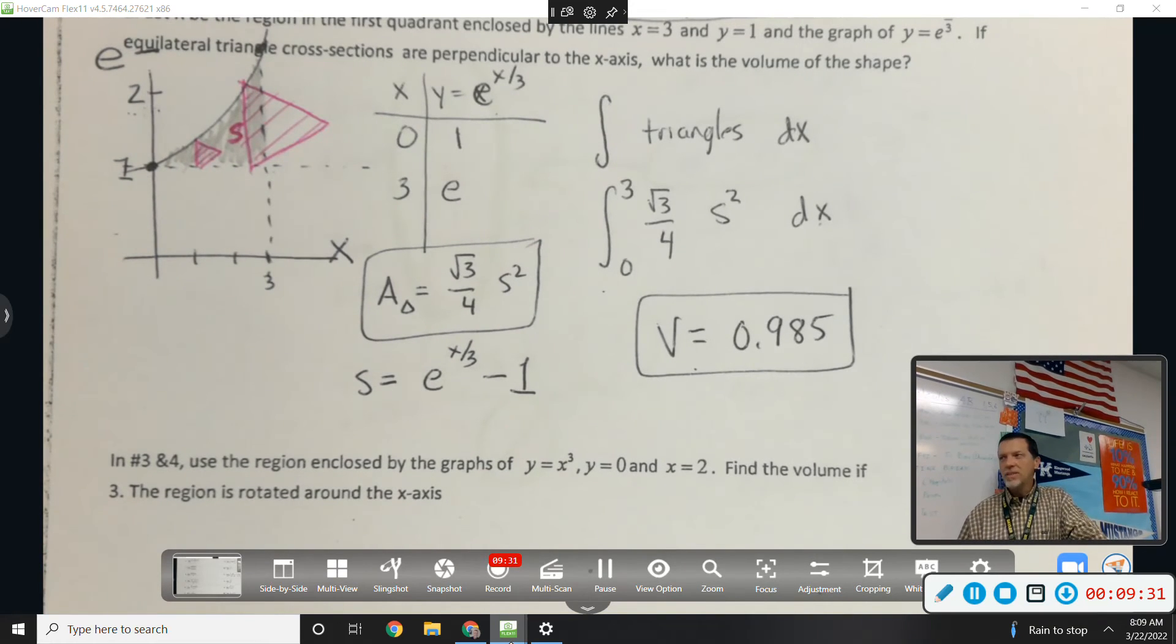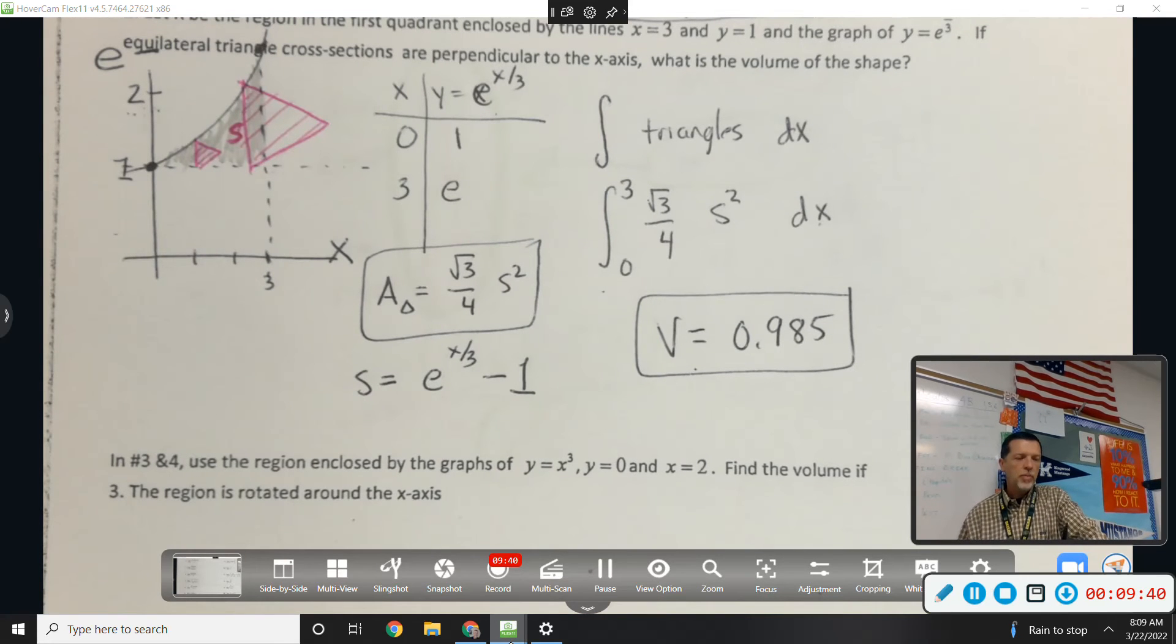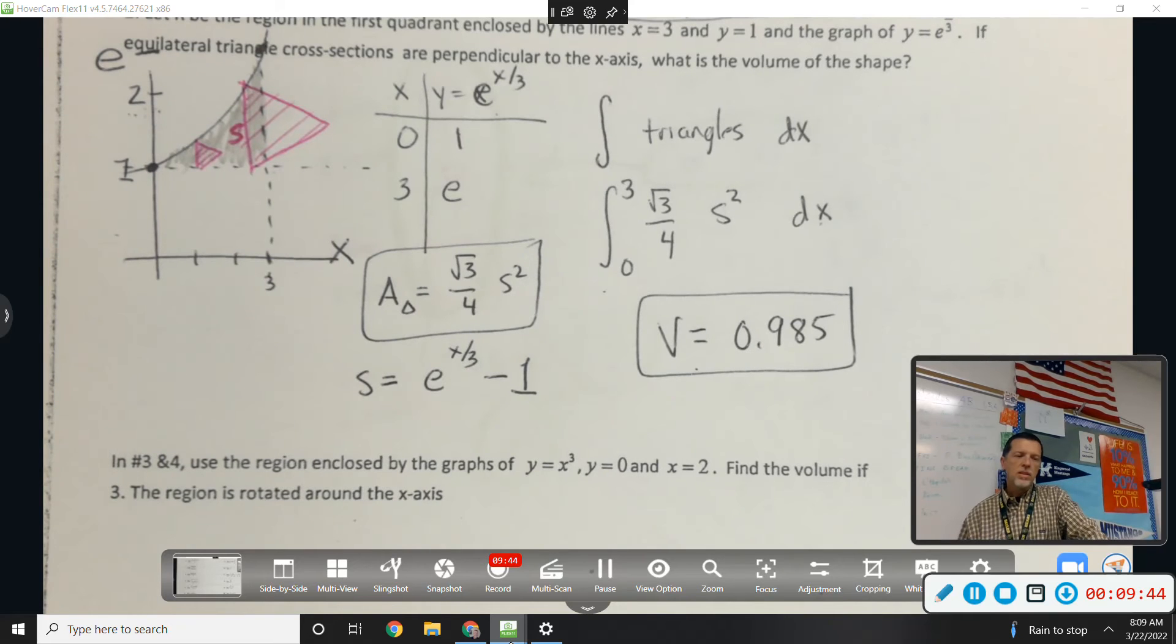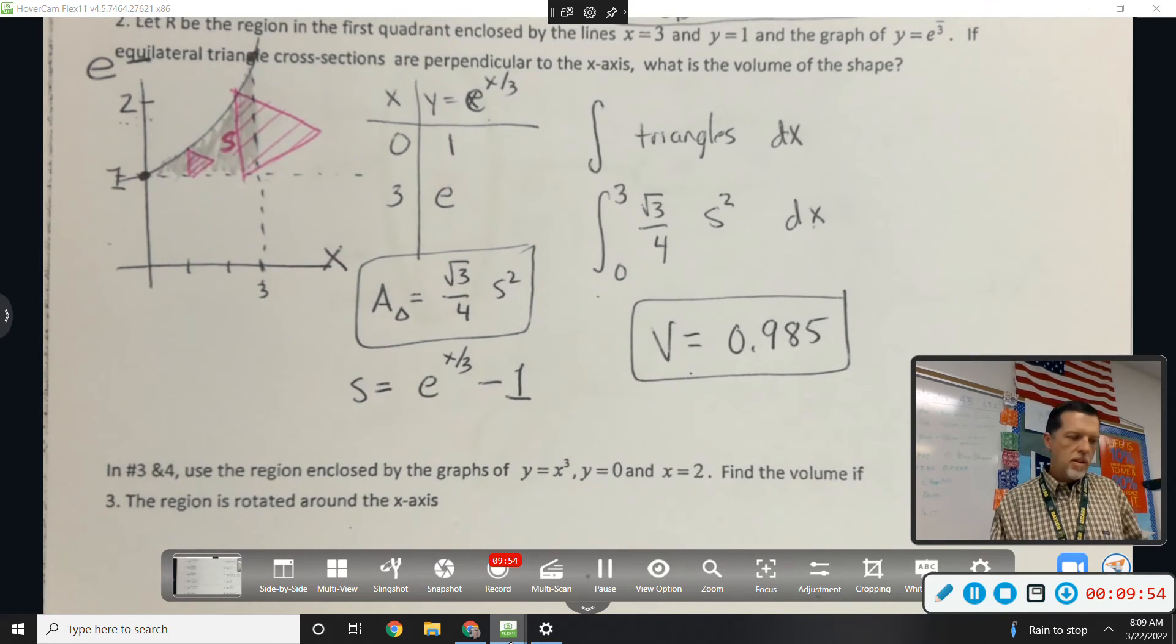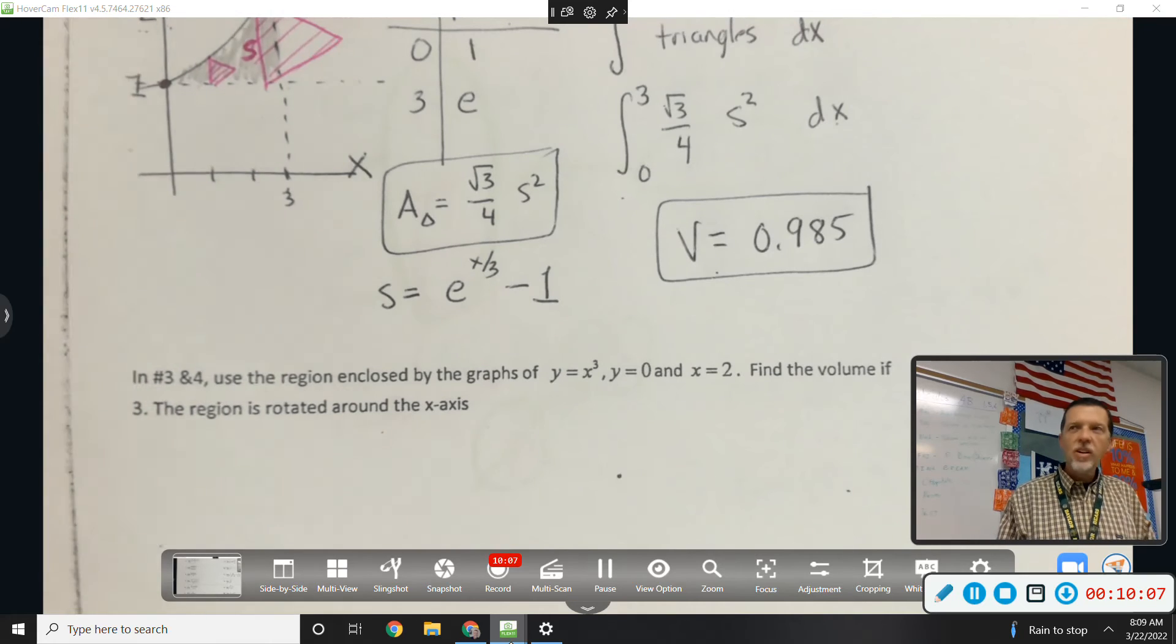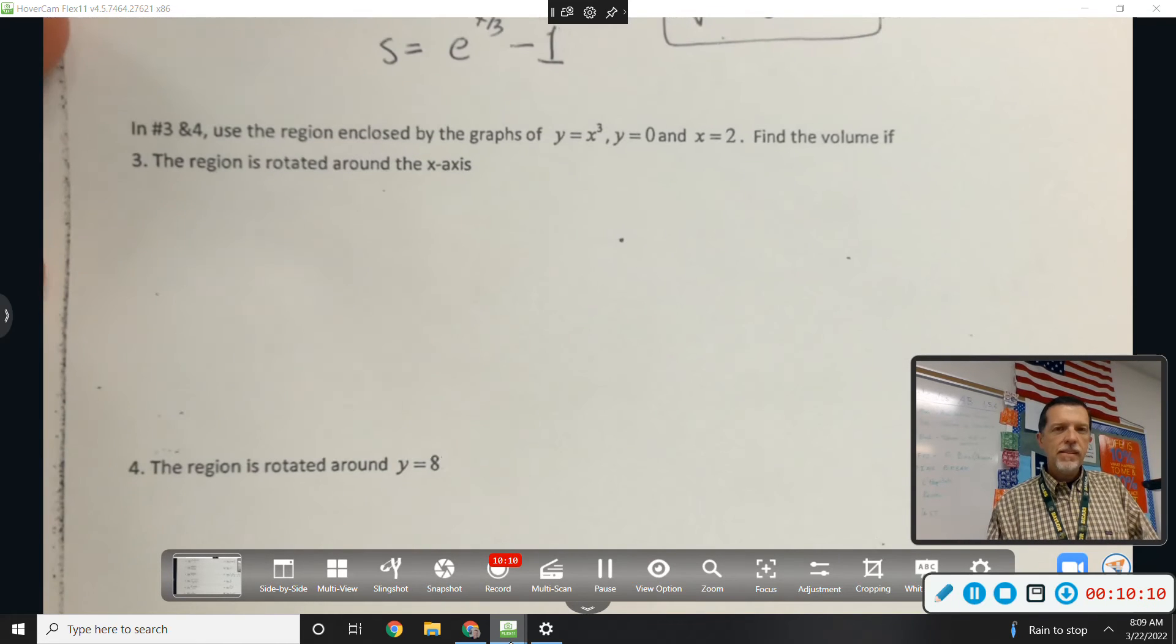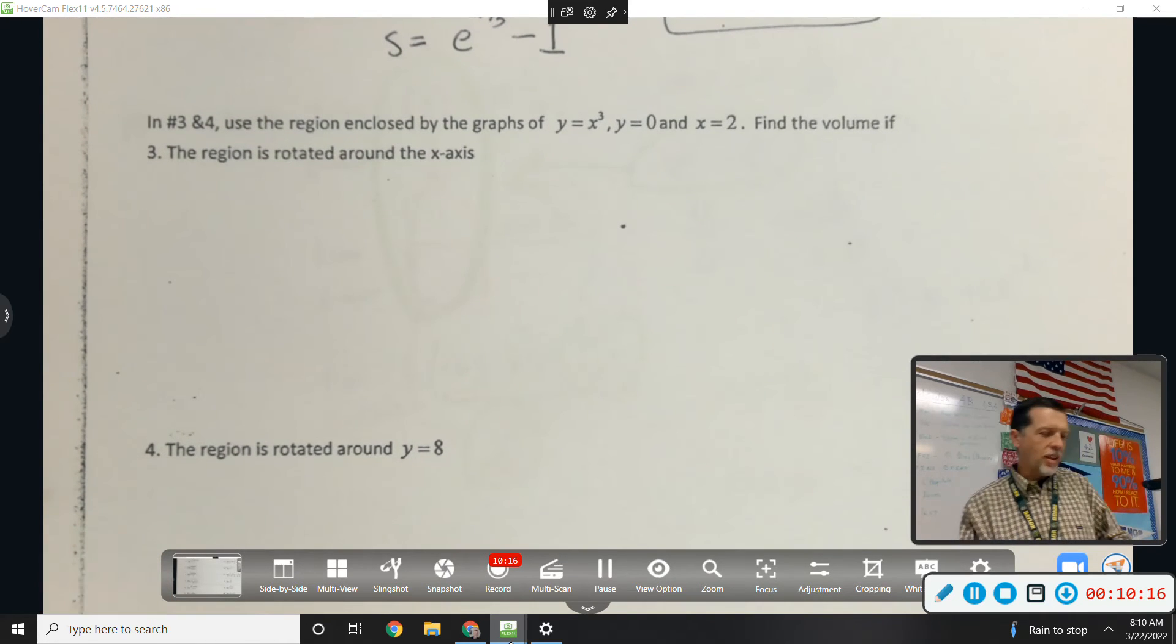Lots of spots for partial credit here, right? Like picture, graphs, some steps along the way of the integral, and then the final answer. Other questions? Keep going. You want me to do 3 and 4? Or 3 or 4? On the review. I'll see if I have time to do both of them. We can get them set up. Maybe I won't go to the calculator.